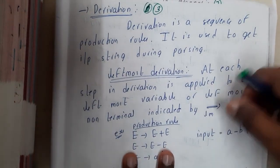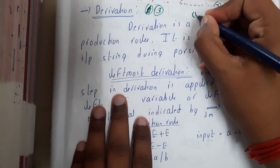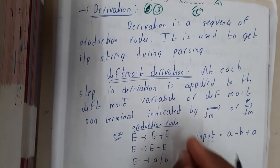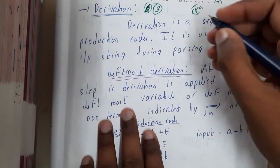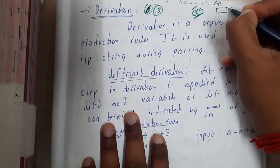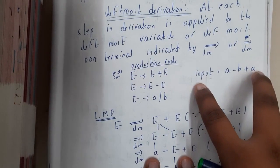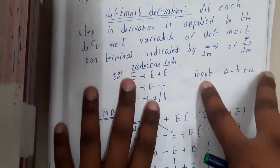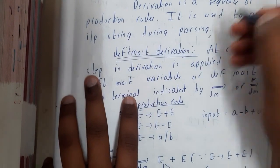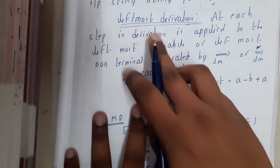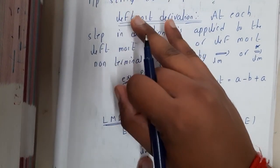Hello guys, welcome back to our next lecture. In our last lecture we discussed about context free grammar. In this lecture let us learn about derivation. Basically, derivation is nothing but using the grammar to produce a particular string. Derivation is a sequence of production rules used to get the input string produced by the parser. We will be using two different methods: leftmost derivation and rightmost derivation.